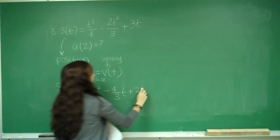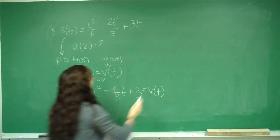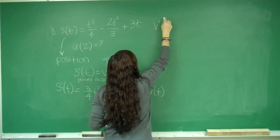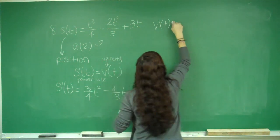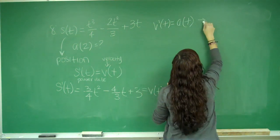Now I have my velocity, so this equals v of t. Now v prime of t is equal to a of t, which is your acceleration.